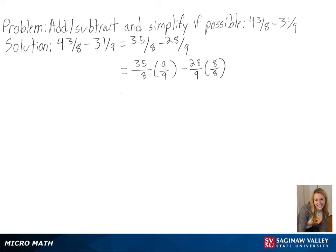In multiplying these out, we get 315 over 72 minus 224 over 72.